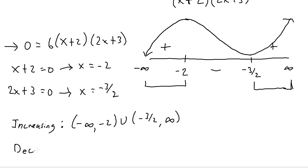And then lastly, for where the function is decreasing, it is only at one interval, from negative 2 to negative 3 halves. So I write negative 2 to negative 3 halves, or negative 1.5.